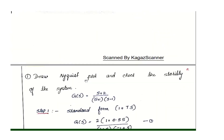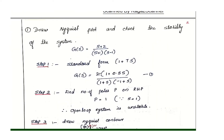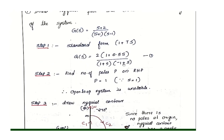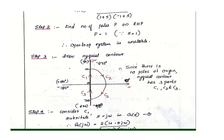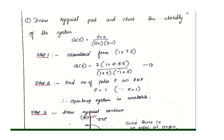Now let's work through an example. Draw the Nyquist plot and check the stability of the system where G(s) equals (s plus 2) divided by (s plus 1) times (s minus 1). We will follow a step-by-step procedure.